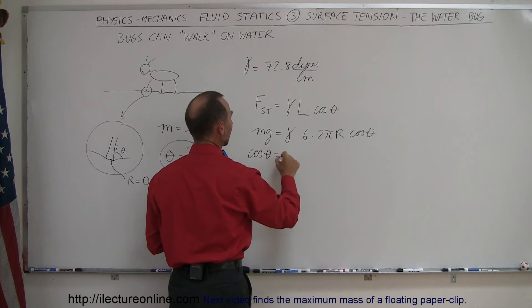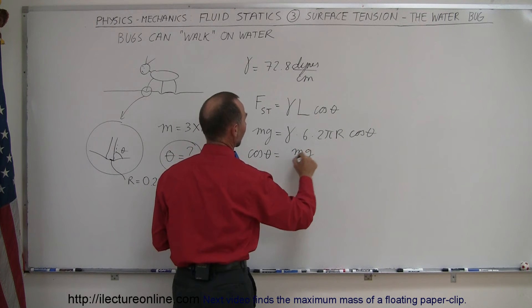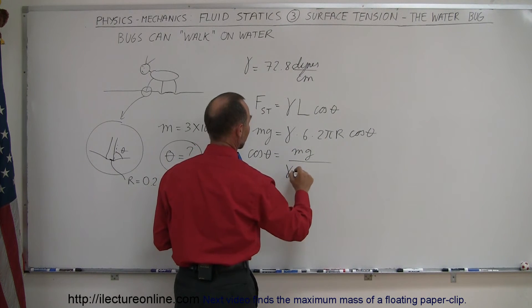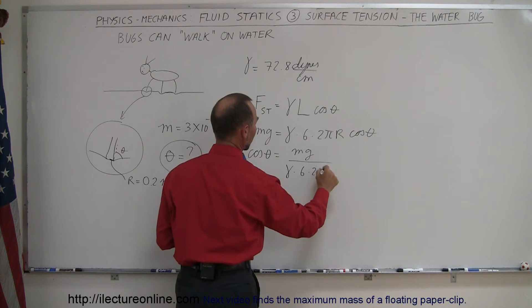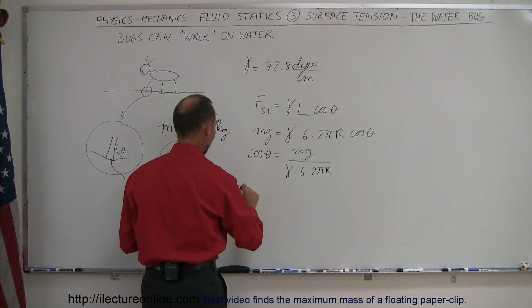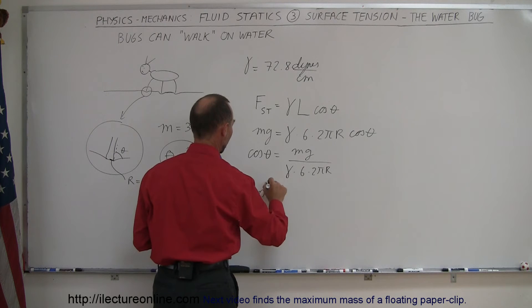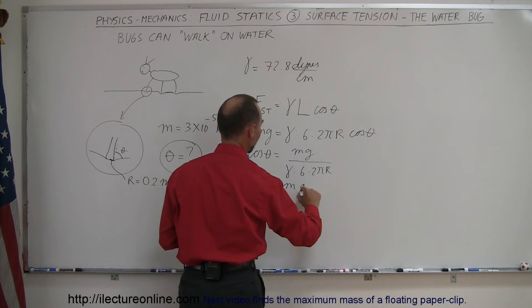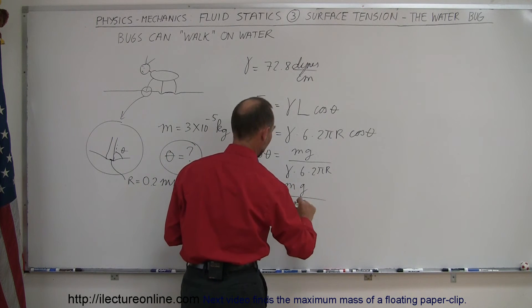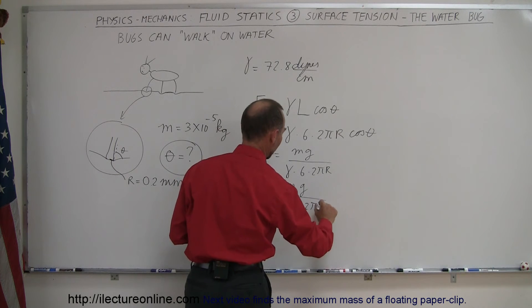So the cosine of theta is equal to mg divided by gamma times 6 times 2 pi r. And then if we take the arccosine of that, theta is then the arccosine of this quantity. So it would be m times g divided by gamma times 6 times 2 pi r.